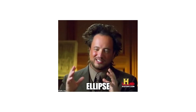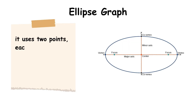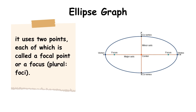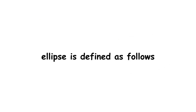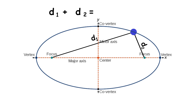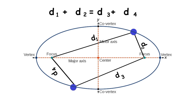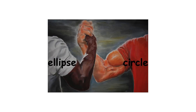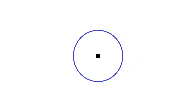Similarly to a circle, an ellipse is defined using distances from points, but it uses two points, each called a focal point or focus (plural: foci). An ellipse is defined so that for any point on it, the sum of the distances from that point to each focal point is always the same. Thus the ellipse is a generalization of the circle — the circle is simply the special case where the two focal points are the same point.